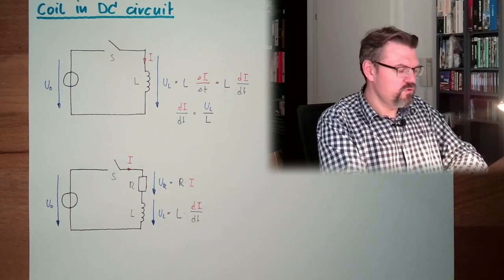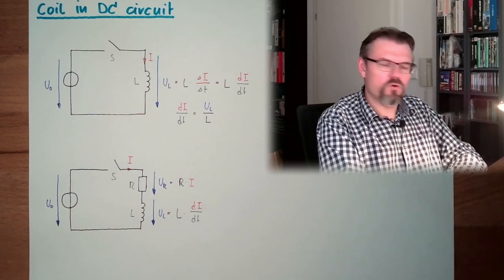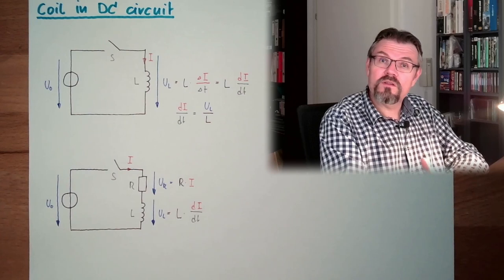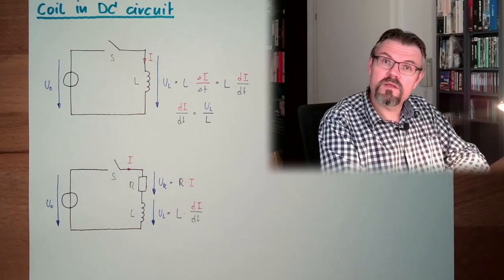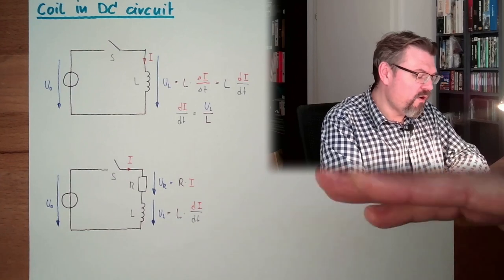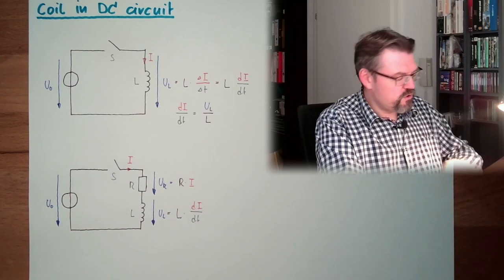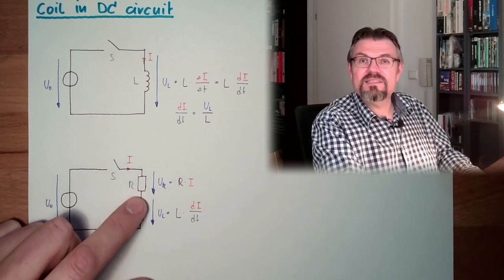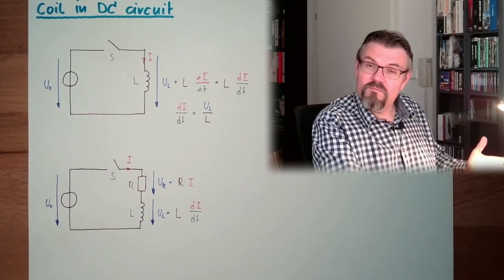So our coil is now behaving like a short circuit, like a piece of wire simply. There is no resistance at all. And our resistance will take all the voltage. So UR has grown now to U zero. So our resistance is limiting the current. That's it.